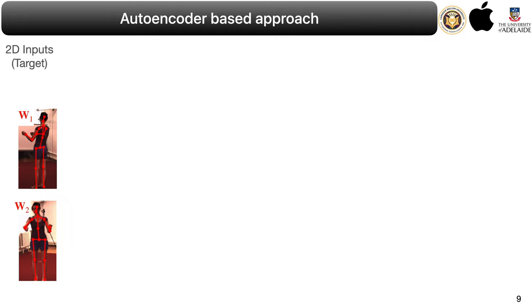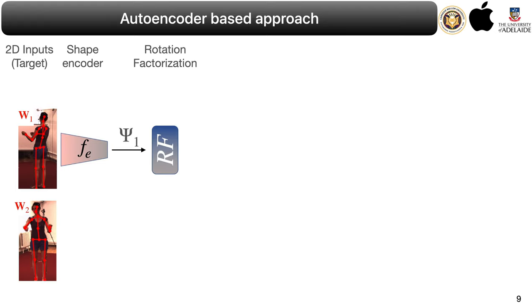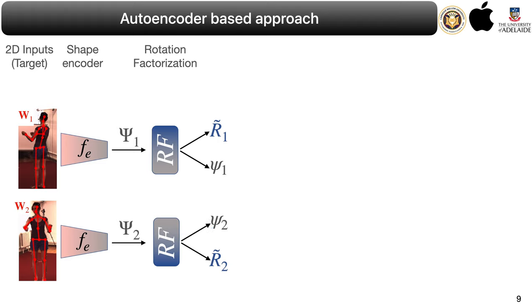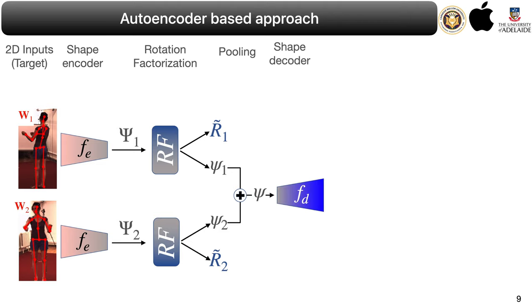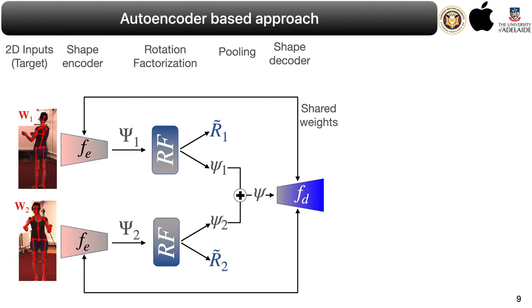Motivated by the hierarchical sparse coding literature, we leverage an autoencoder-type approach where the network FE extracts the block sparse codes Ψ. Thereafter, the bottleneck layer — termed the rotation factorization, or RF layer — factorizes the block sparse code into a rotation or projection matrix and the unrotated vector sparse code ψ. Consequently, the same encoder FE is used over any available views to obtain the unrotated vector sparse codes and projection matrices for that view at the bottleneck. These unrotated vector sparse codes are then pooled together and fed into a unique shape decoder FD, whose weights are shared with the encoder. Since the pooled codes are rotationally invariant, they generate a 3D structure S in a canonical frame.